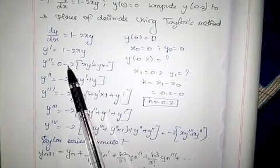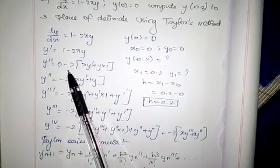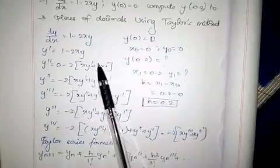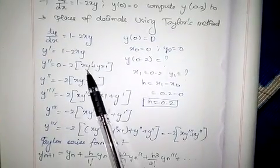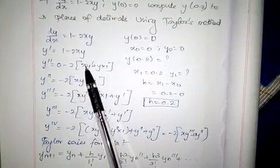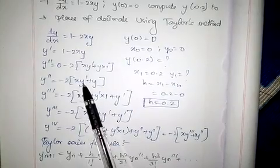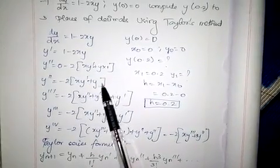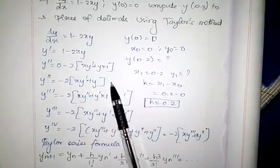That becomes 0 is already 0 minus 2 times xy', which is also in the form of uv. By differentiating this xy using uv' formula, we continue differentiating.